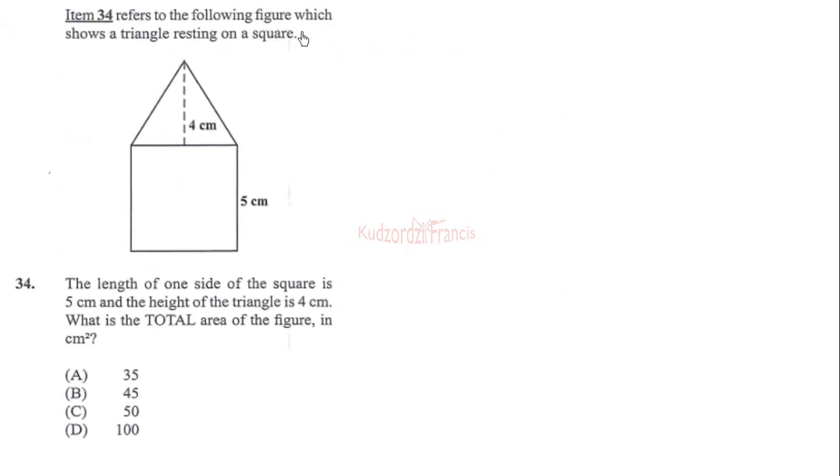Item 34 refers to the following figure which shows a triangle resting on a square. It's a square, so all sides are equal. This is also 5 centimeters, as well as these 5 centimeters. The length of one side of the square is 5 centimeters and the height of the triangle is 4 centimeters. What is the total area of the figure in square centimeters? Total area equals area of the square plus area of the triangle. We find area of a square by squaring one of the side lengths. Area of a triangle is half base times perpendicular height.